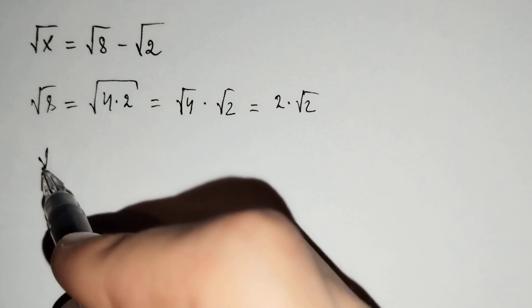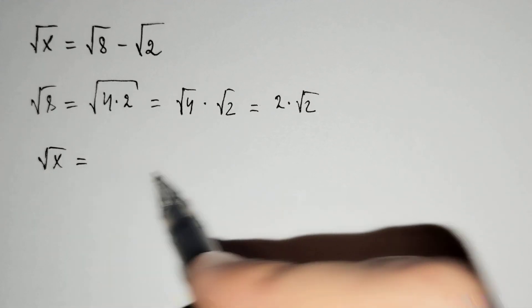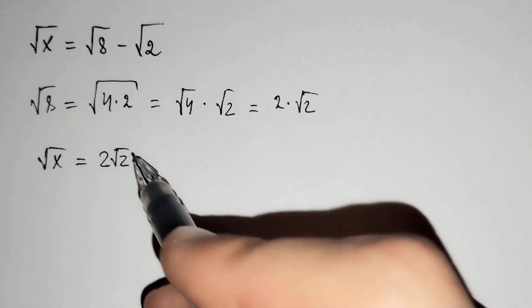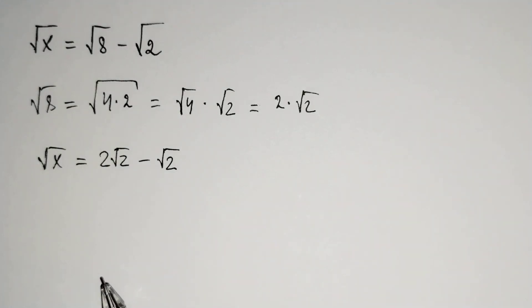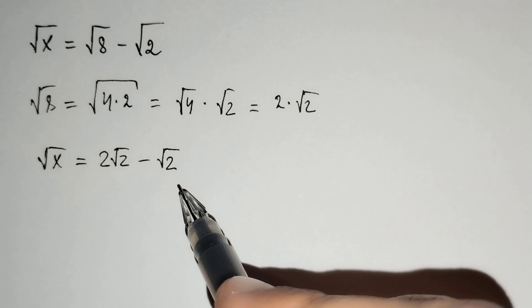And the square root of x equals 2 times square root of 2 minus square root of 2, and it does square root of 2.